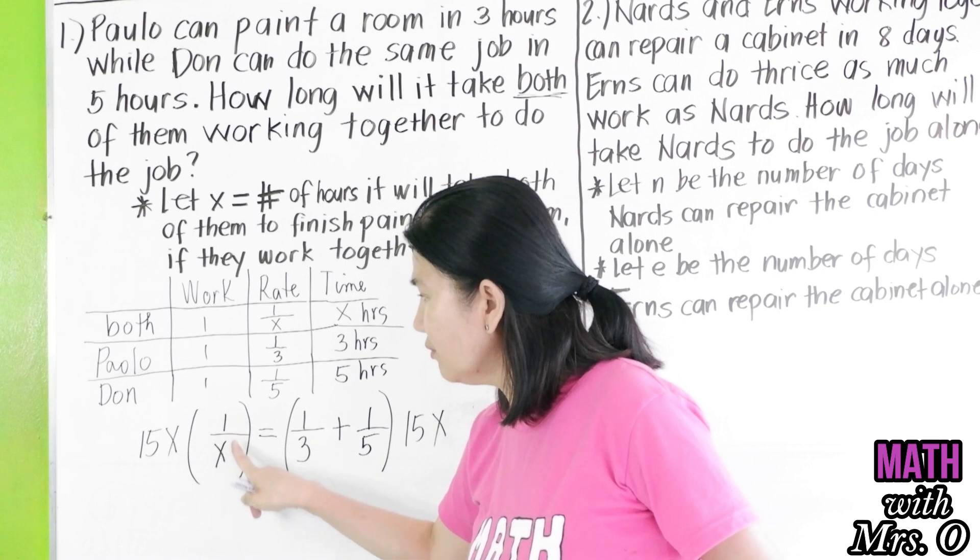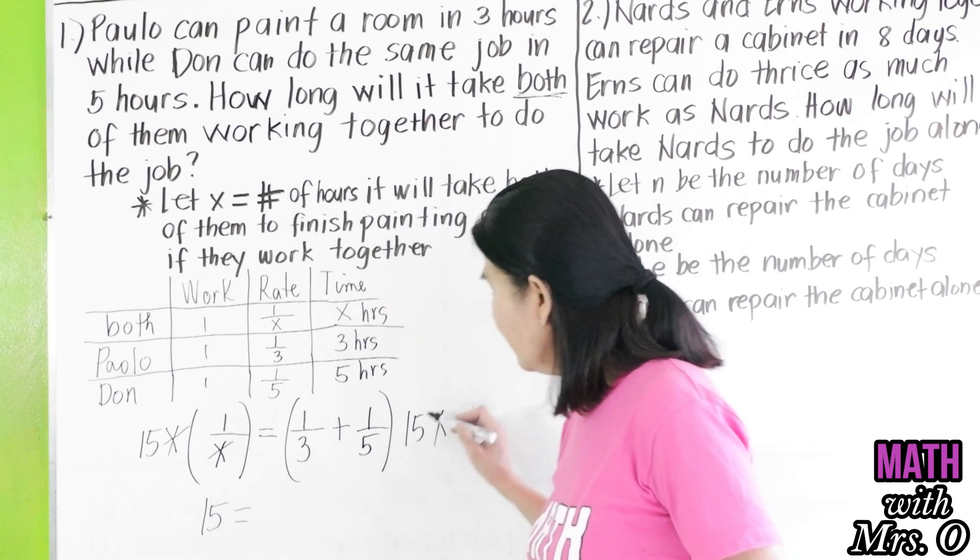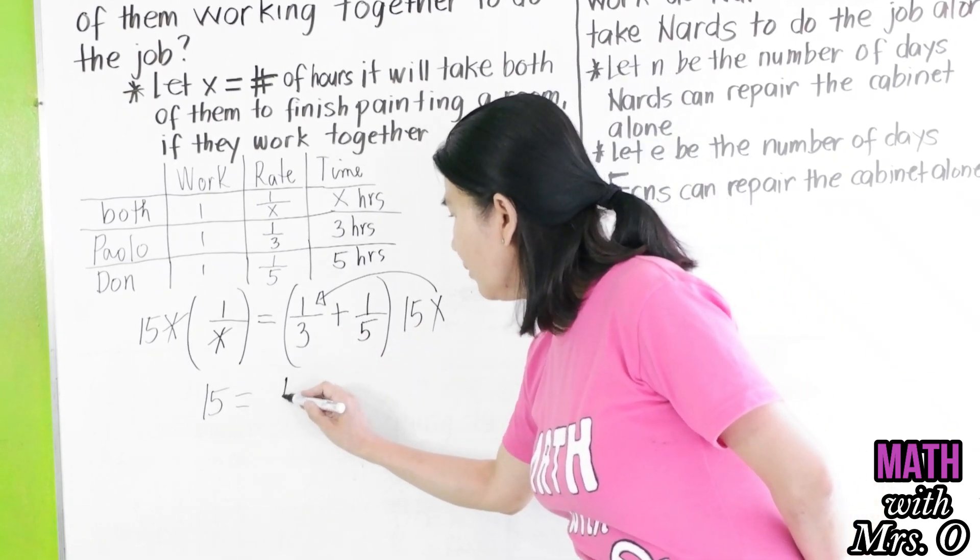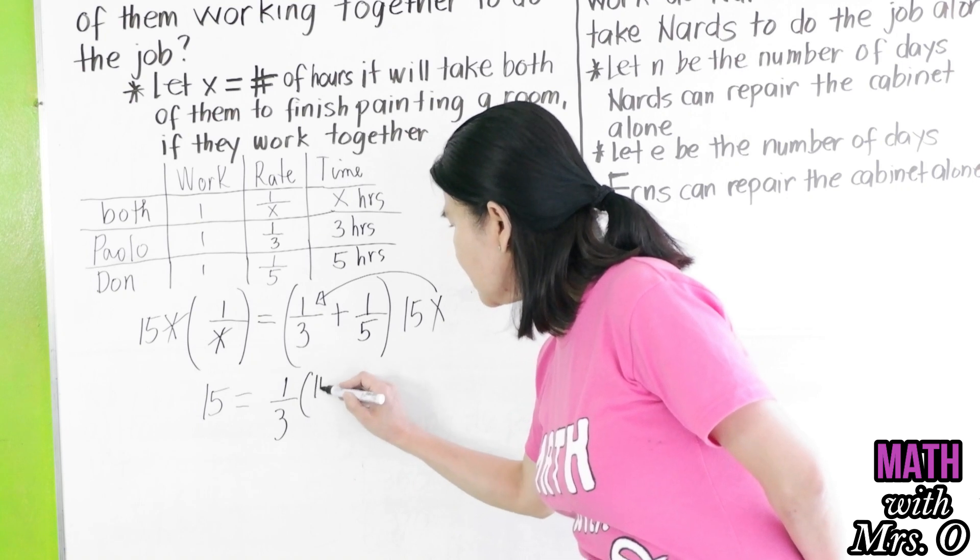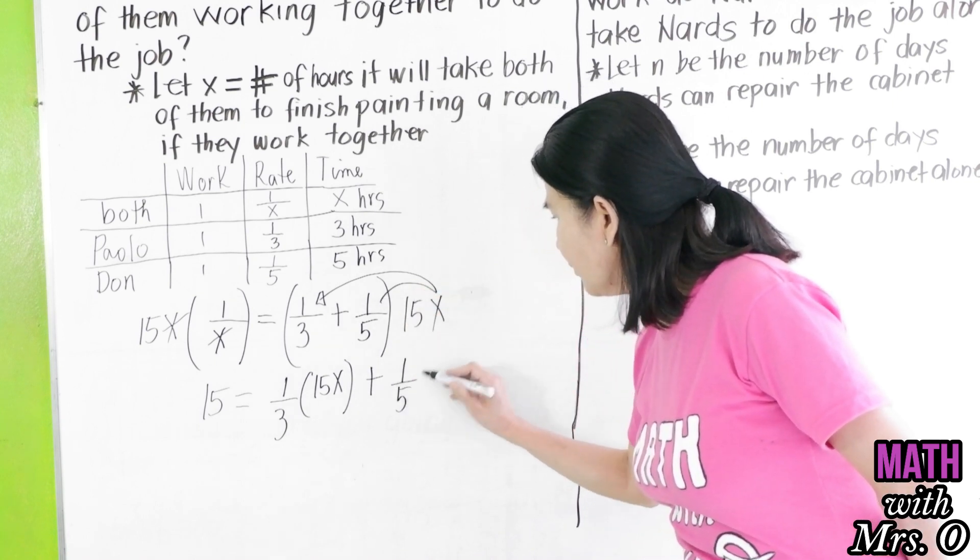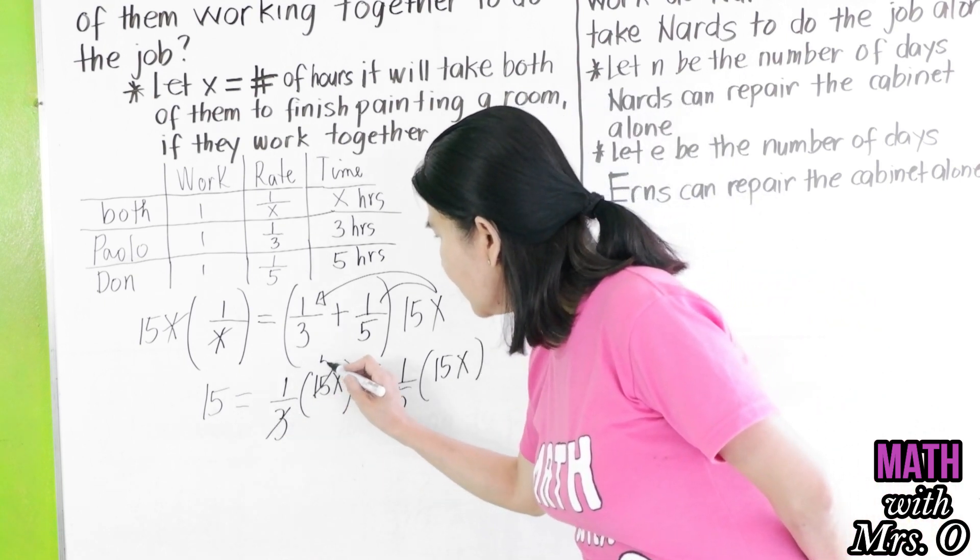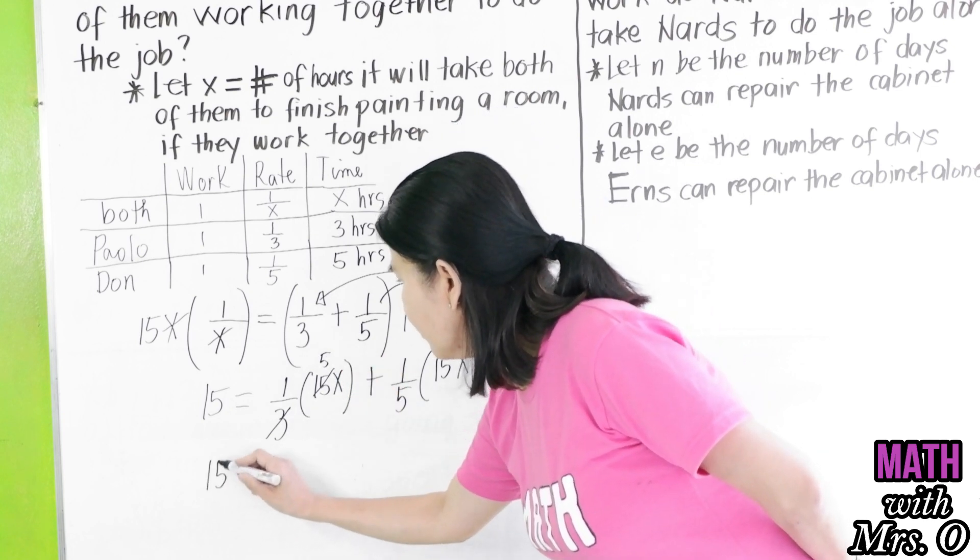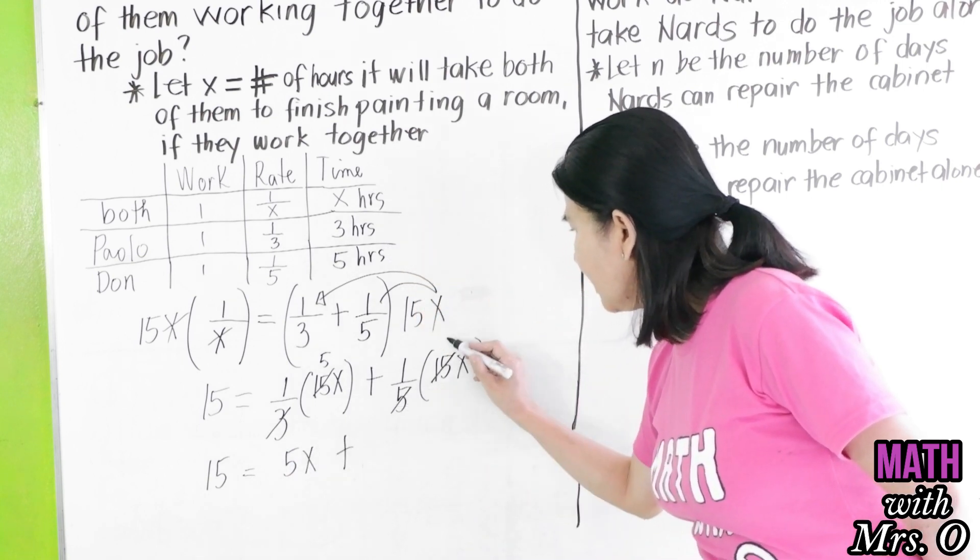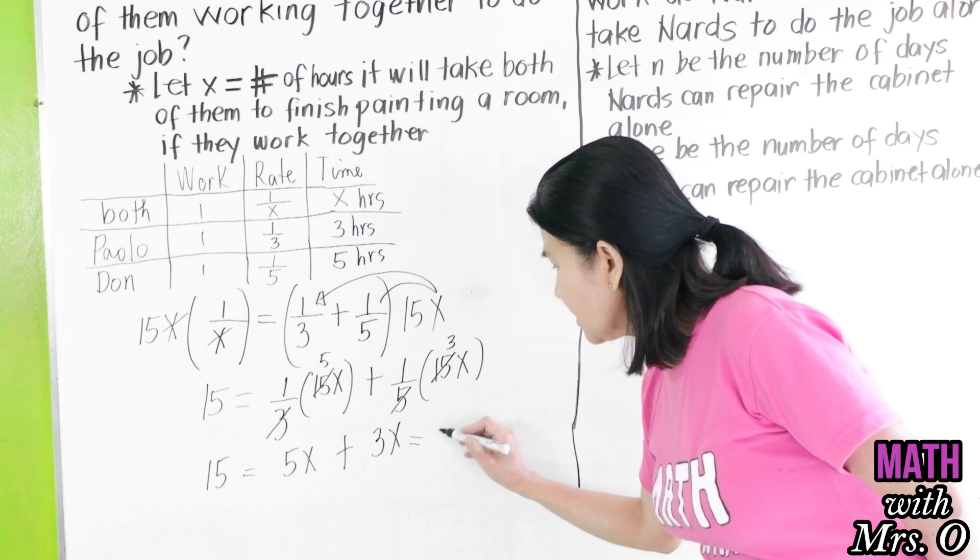So 15X times 1 over X, the X will cancel. You're left with 15. 15X times one third, that gives you 15 divided by 3. Or, okay, I'll just do it step by step so that everybody can understand, plus 15X times one fifth. So 15 divided by 3 gives us 5. So we are now left with 15 equals 5X plus, 15 divided by 5 is 3, which is now 8X.